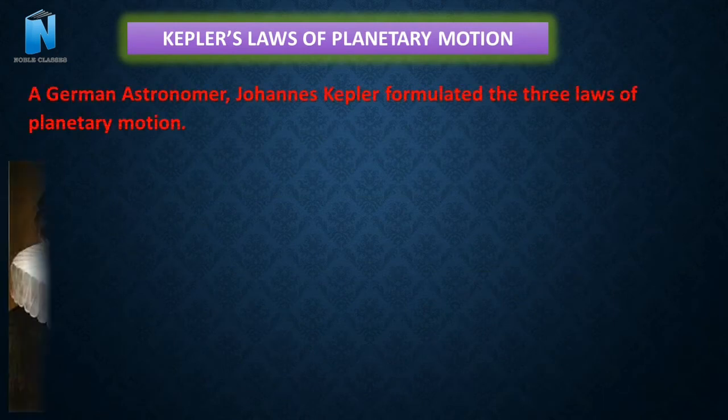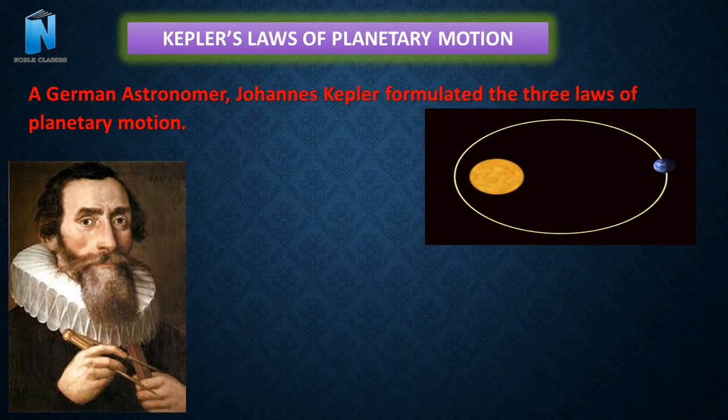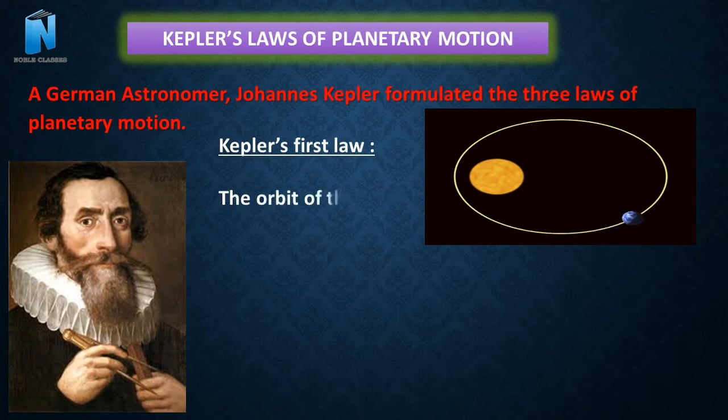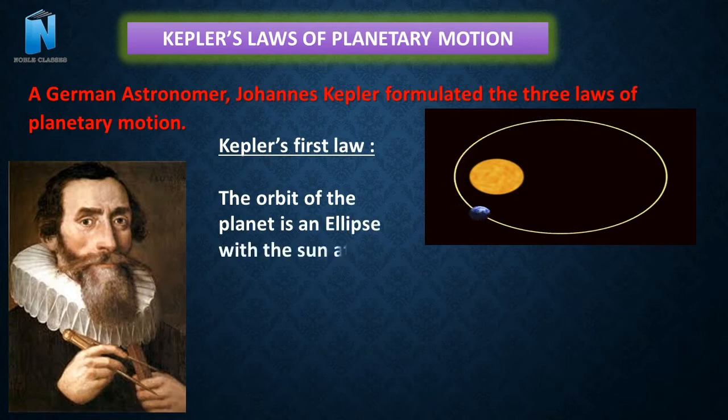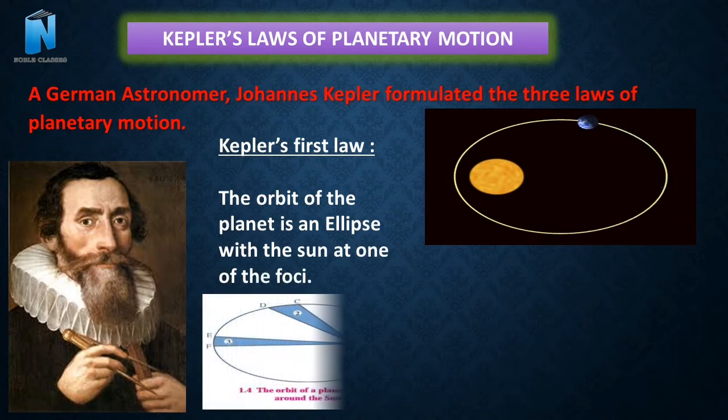Let's see Kepler's Law of Planetary Motion. He has given three laws for planetary motion. He said that every planet revolves around the sun in an elliptical orbit with the sun at one of the foci. This becomes the first statement that is the orbit of a planet is an ellipse with the sun at one of the foci. Let's see Kepler's second law.